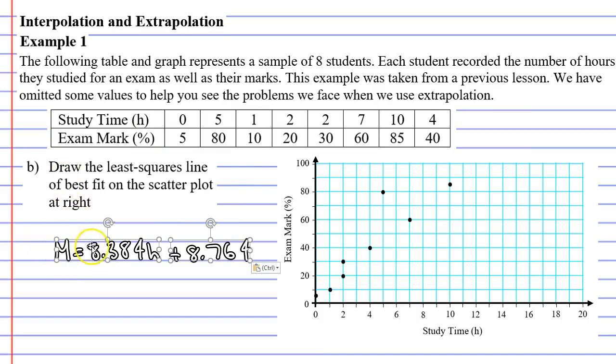Question B wants us to draw the least squares line of best fit on the scatter plot at right. And the best way to do that is just to plot two points and draw a line that connects these two points.